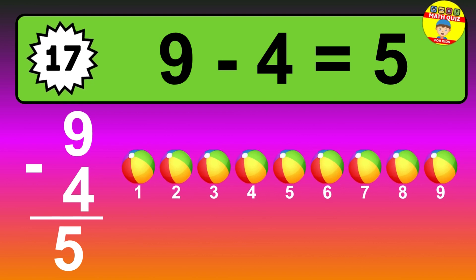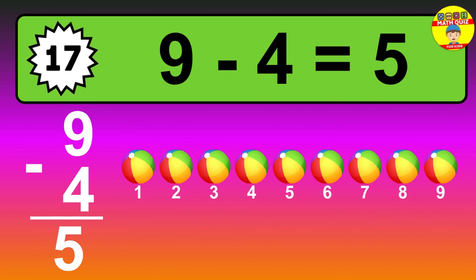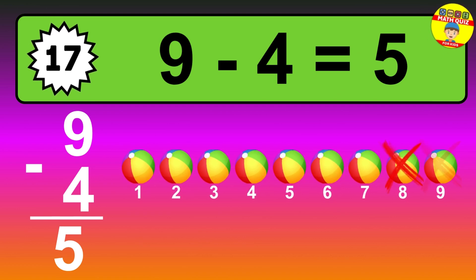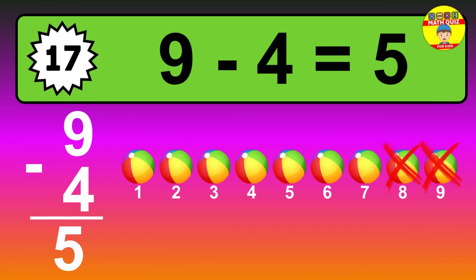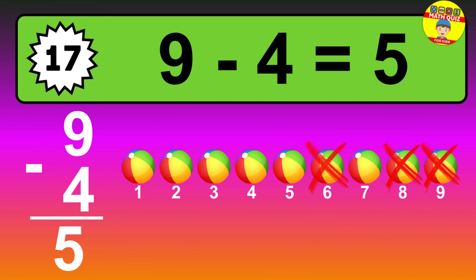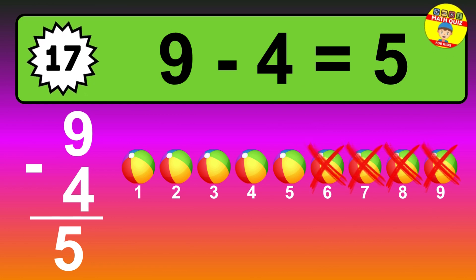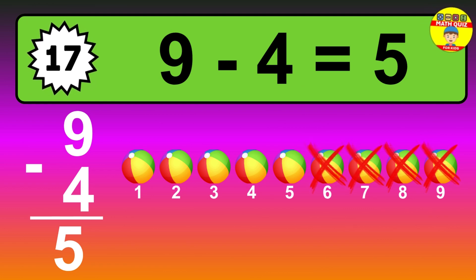Question seventeen: nine minus four equals what? The answer is nine minus four is five. Let's count it: one, two, three, four, five.